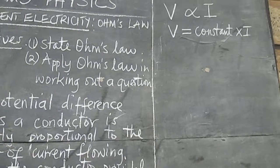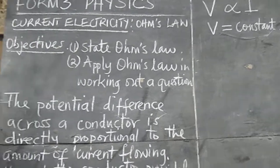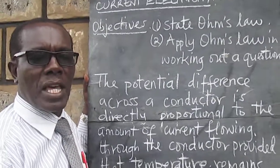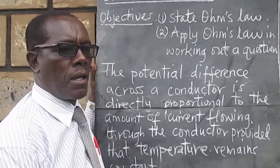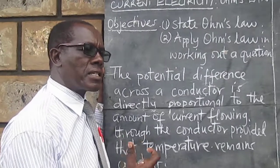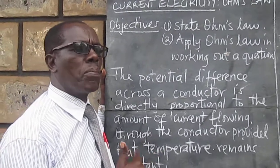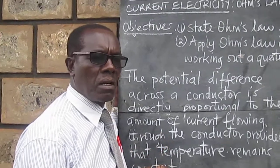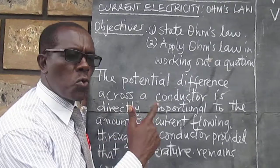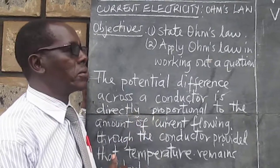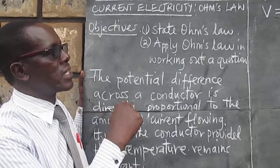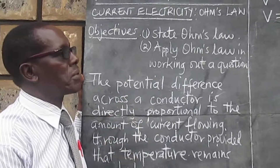This constant in this case has a name — it is actually the resistance of the conductor. The resistance of a material is the opposition to the flow of current through that material. In terms of symbols, resistance is represented by capital R.